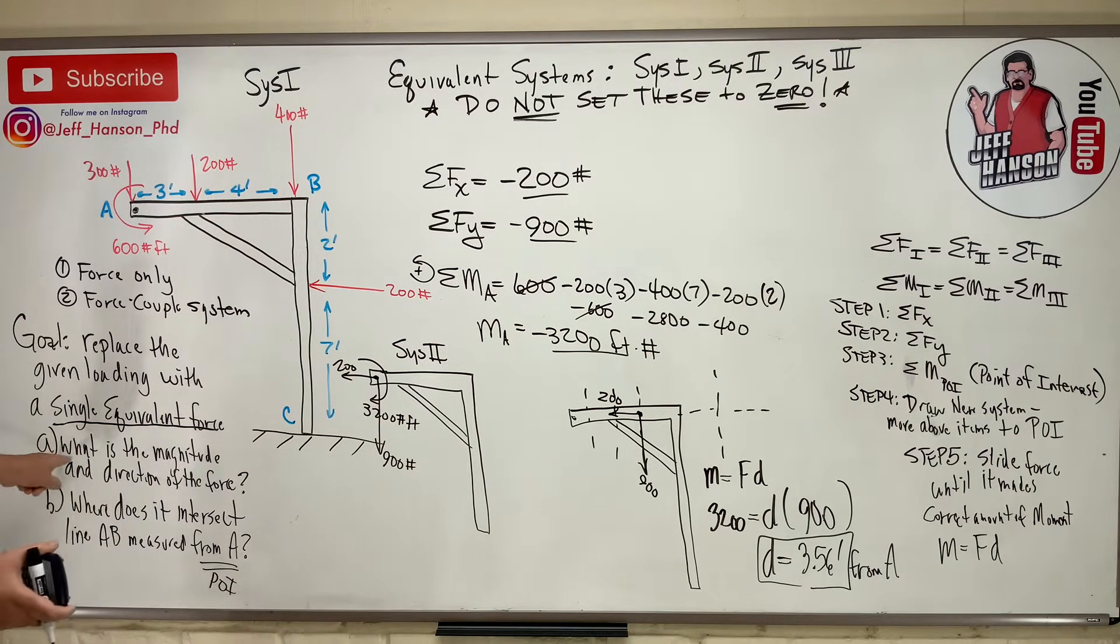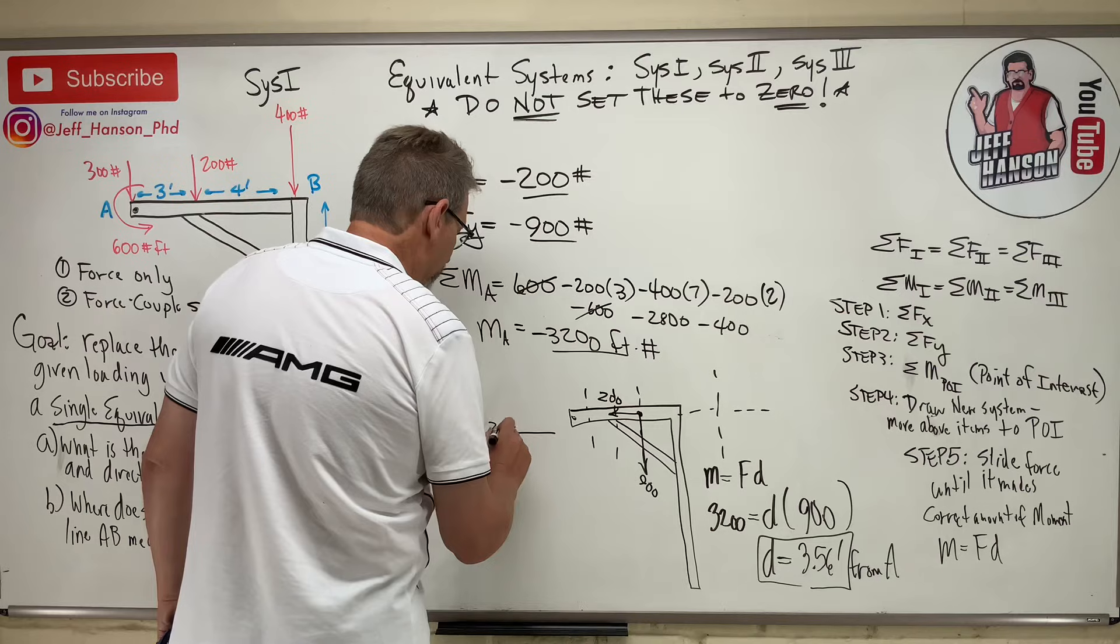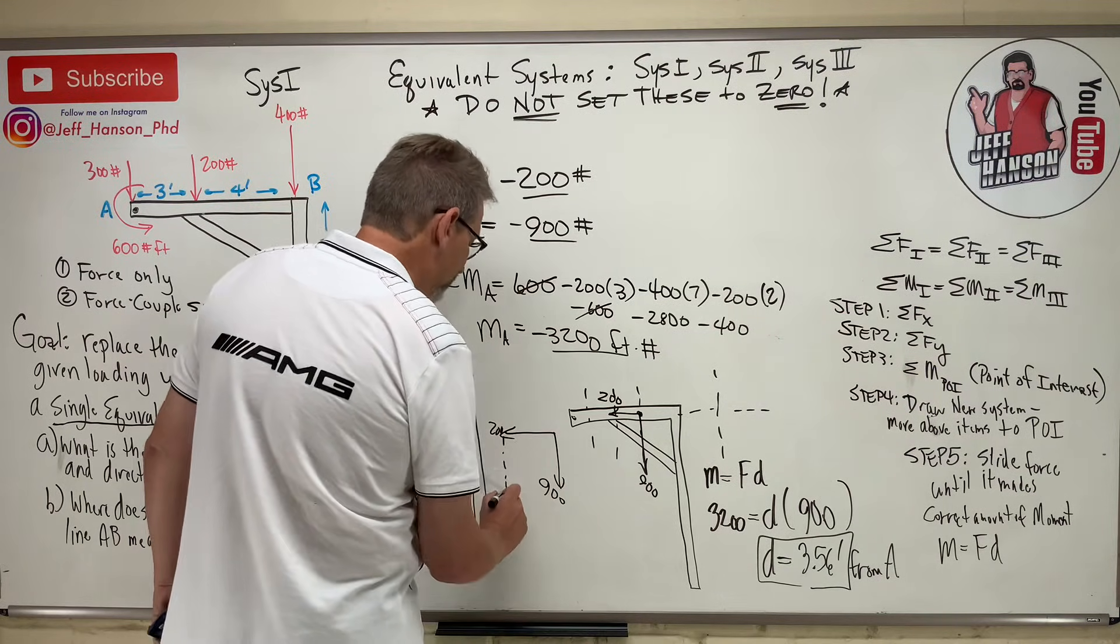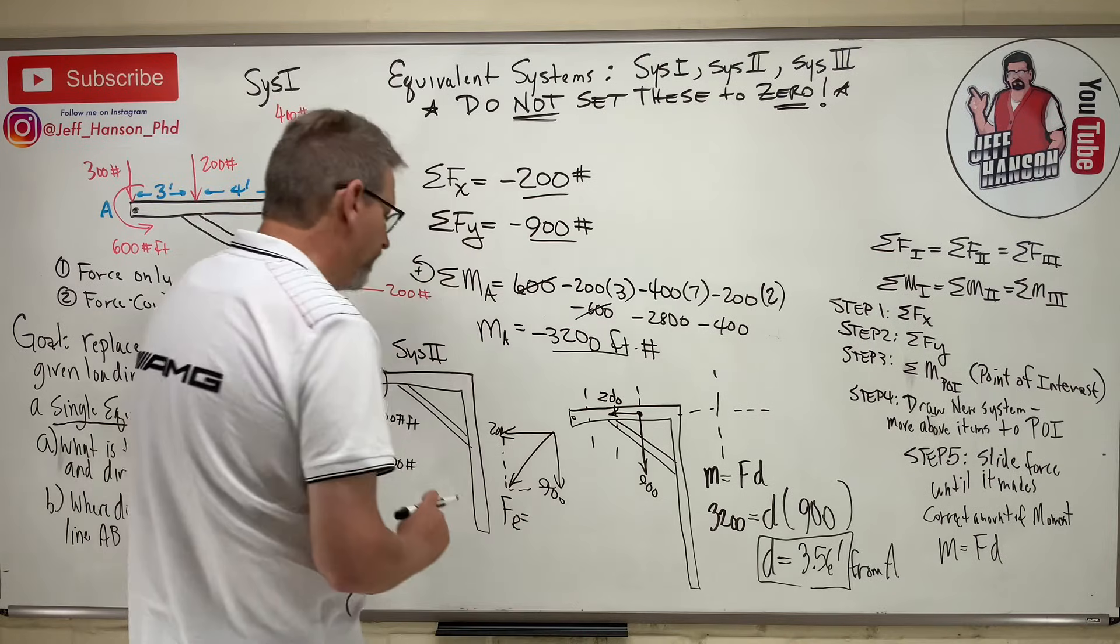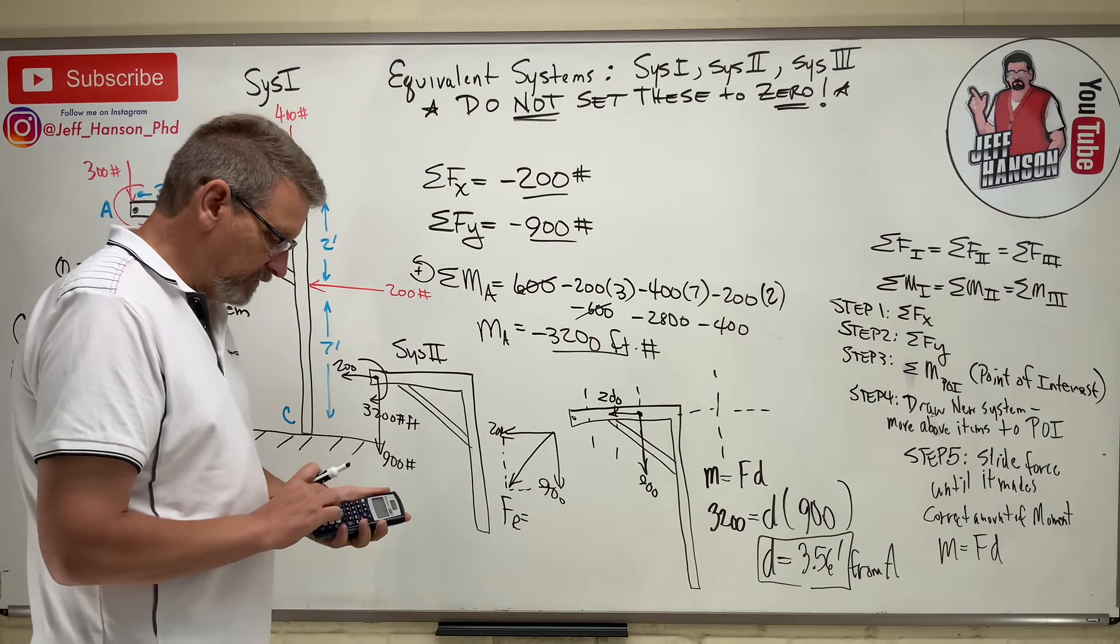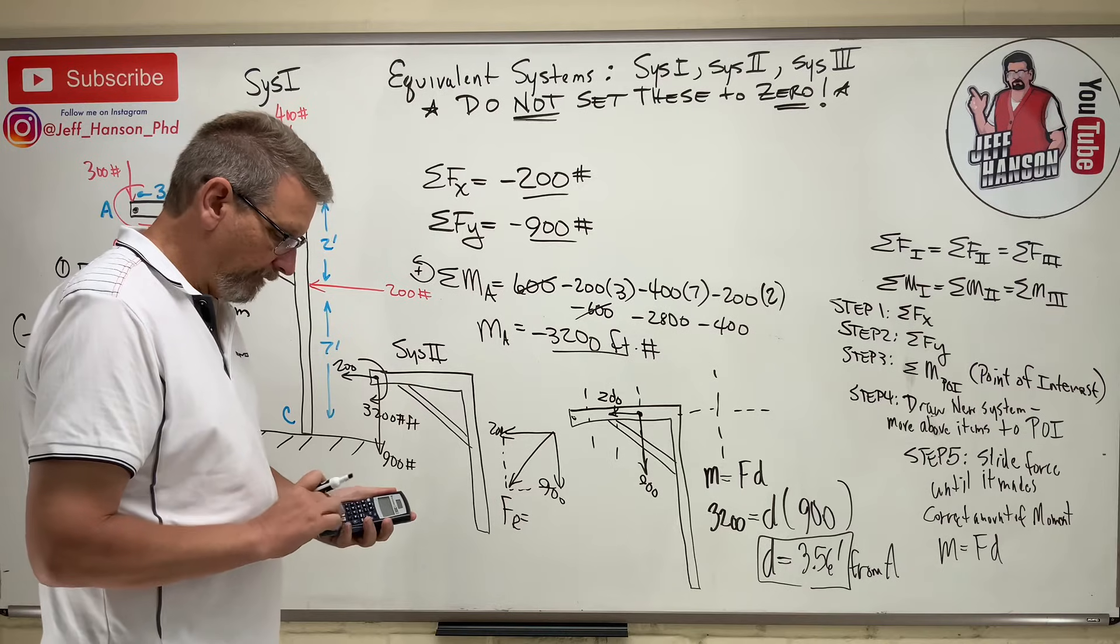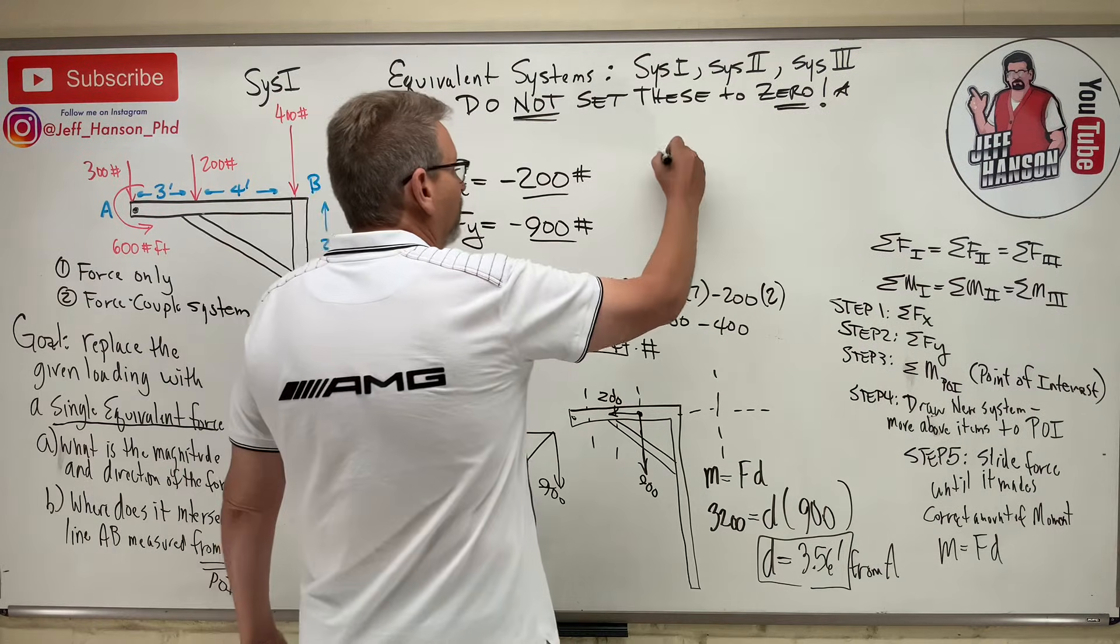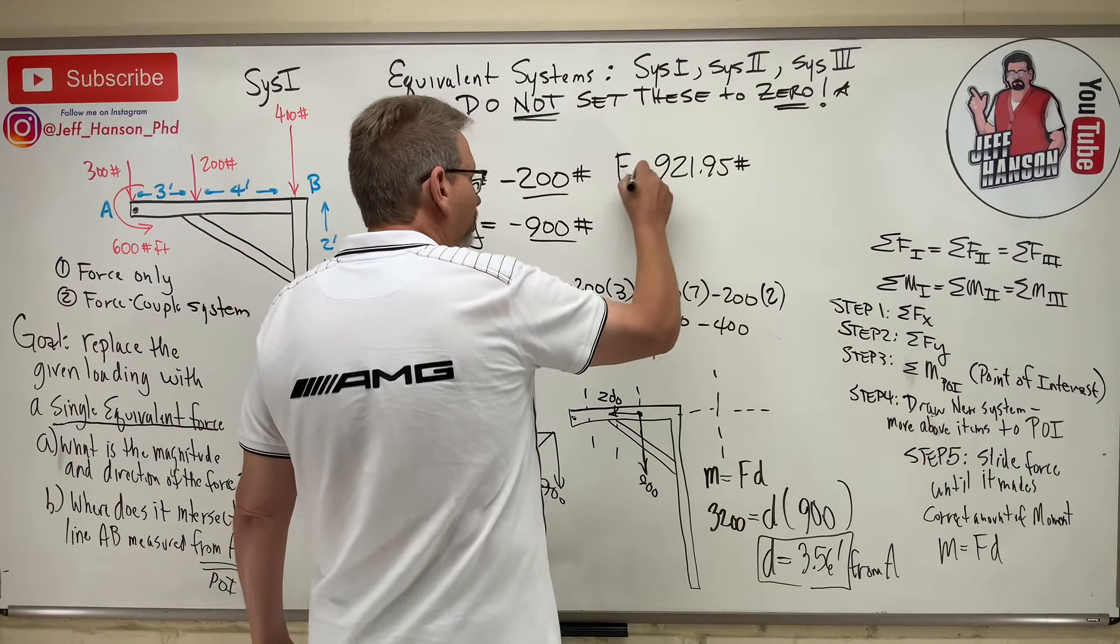Now, what does this say? What is the magnitude of the direction of this force? Well, that's kind of easy. 200, 900. What's the magnitude of that? Well, there it is right there. Fr is 200 squared plus 900 squared equals, and then the square root of that, is 921.95. So, the answer is 921.95 pounds. That's the magnitude of the resultant force.